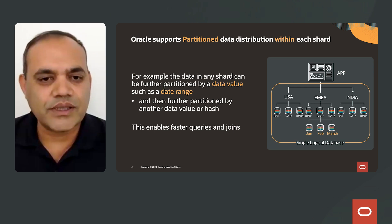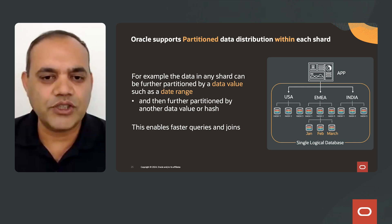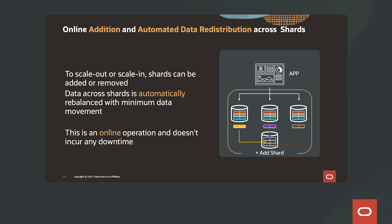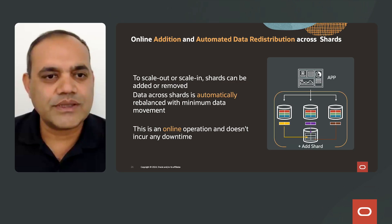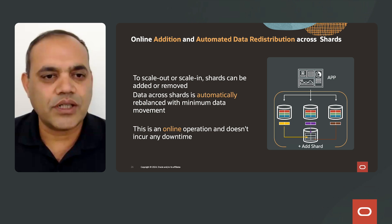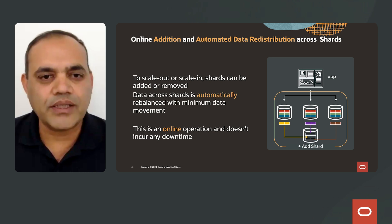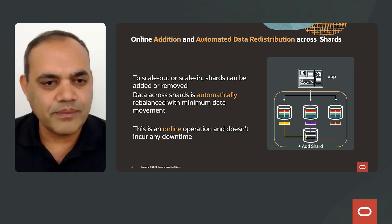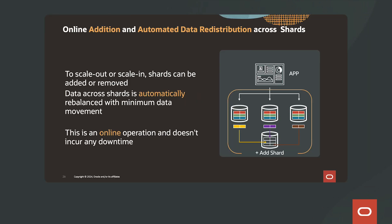This enables faster queries and joins within a shard. Shards can also be added without incurring any downtime, and data automatically gets redistributed across shards to enable scale-out or scale-in for seasonality. Data across shards is automatically rebalanced with minimum data movement. This is an online operation and does not incur any downtime.